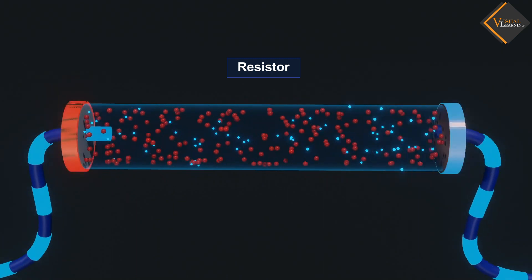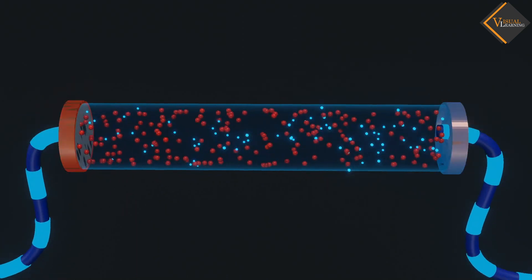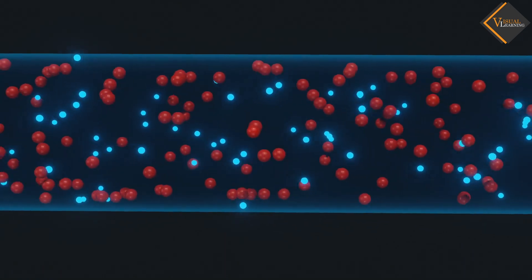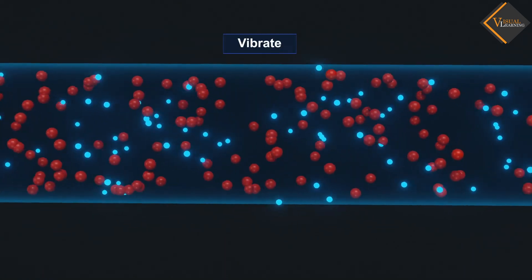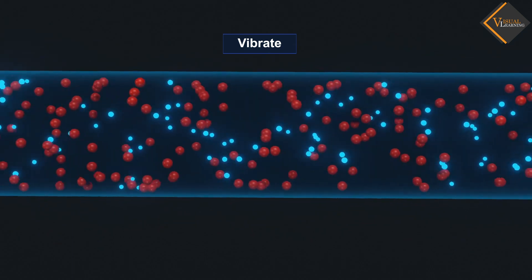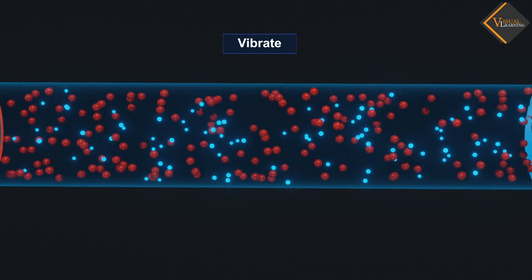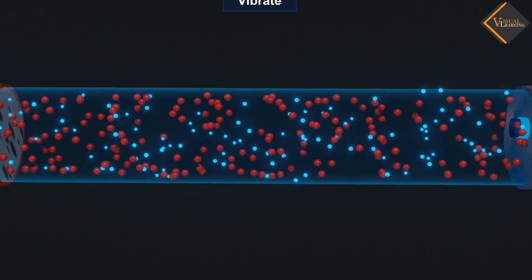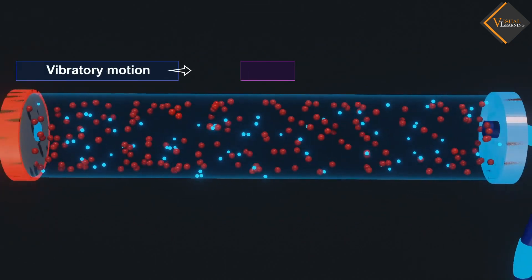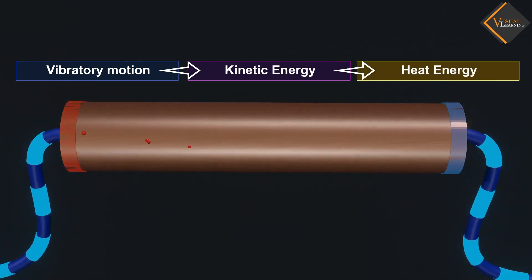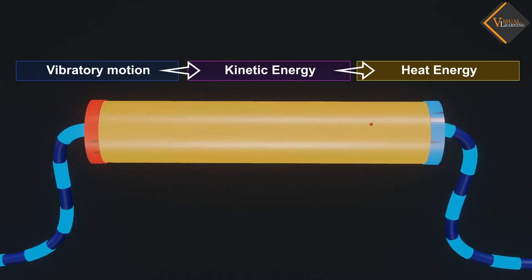When electrons flow within the resistor, they collide with the atoms of the resistor. And because of that, atoms start to vibrate. More the collision, more atoms vibrate about their mean position. This vibratory motion of atoms generates heat energy within the resistor, and hence, the temperature of the resistor increases.